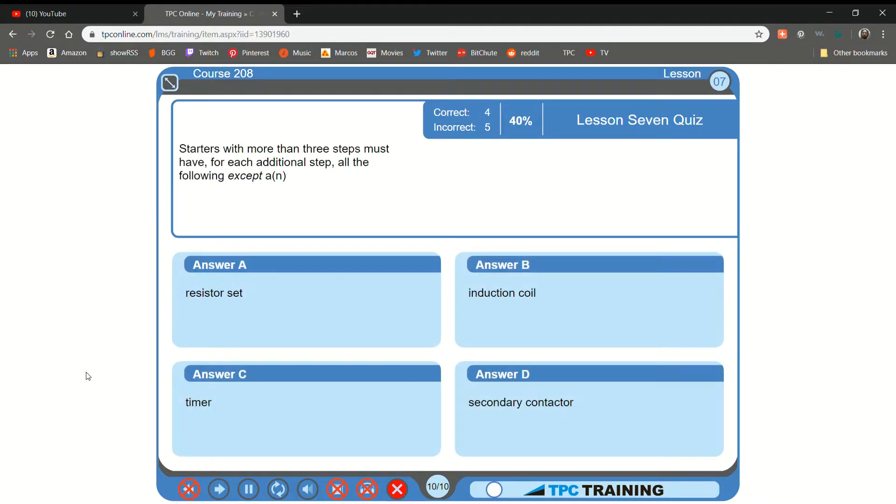Starters with more than three steps must have, for each additional step, all the following except... A. A resistor set... B. An induction coil... C. A timer... D. A secondary... That is correct.